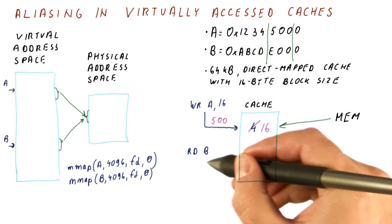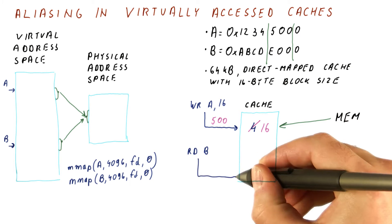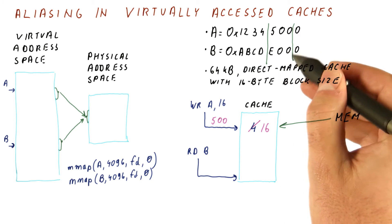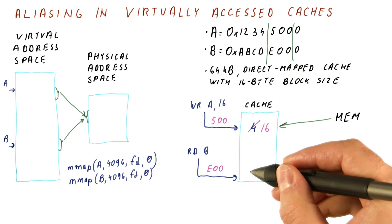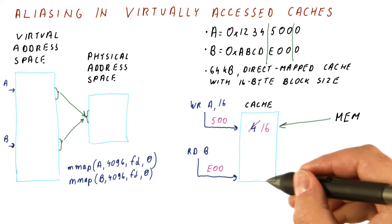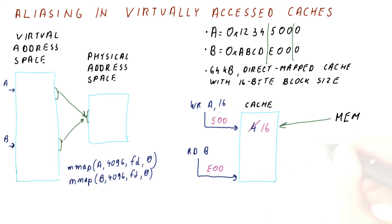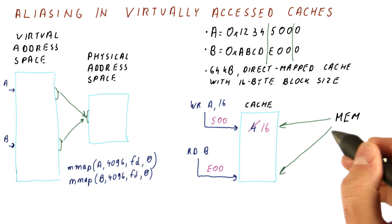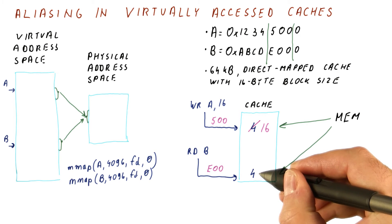Now let's see what happens when we try to read B. We index into the cache using the index for B, which is E00 hex. And because what we are looking for is not here, we go to memory and fetch the value. And this maps to the same physical memory location. So we are going to get 4 again. And now we are going to read that.